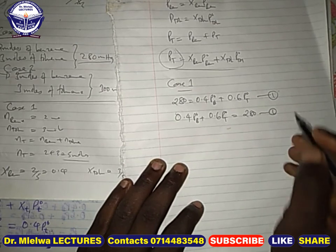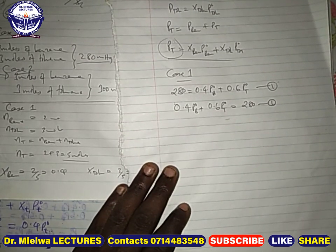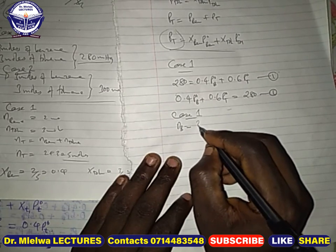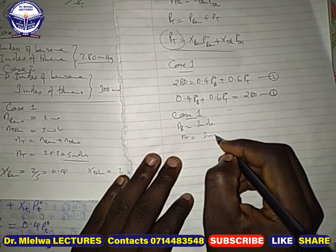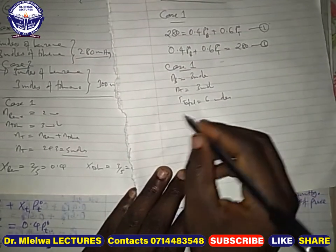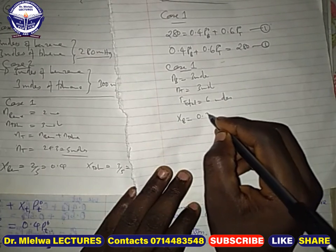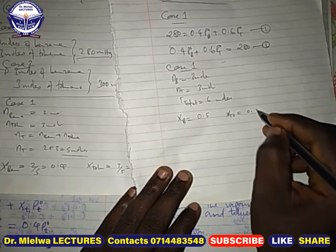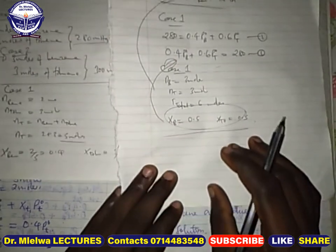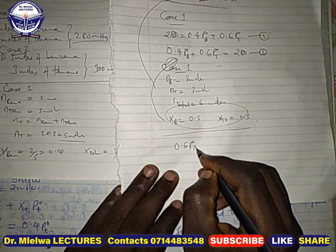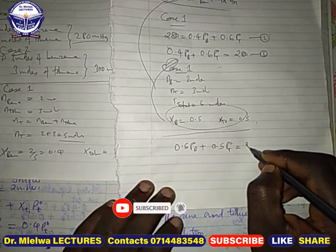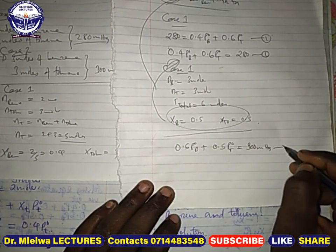Now for case two, one mole of benzene is added, so the number of moles of benzene equals three and toluene equals three, giving a total of six moles. The mole fraction of benzene is 0.5 and the mole fraction of toluene is 0.5. Substituting into the Raoult's law equation: 0.5 P° benzene + 0.5 P° toluene = 300 mmHg. This is equation 2.